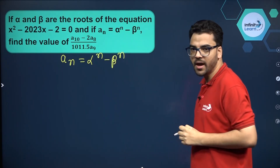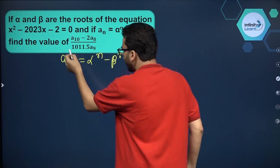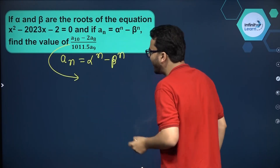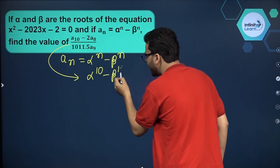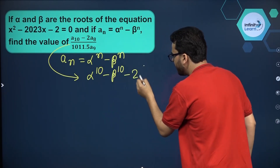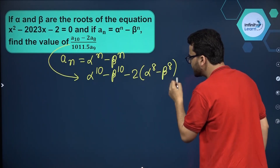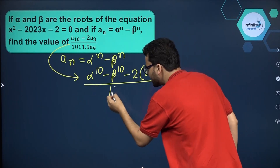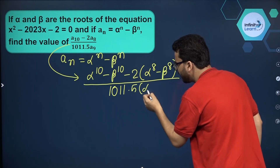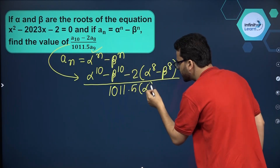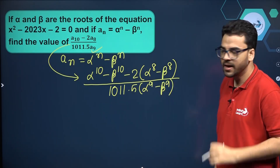The very first thing is to see what we actually have to find. Aₙ equals alpha raised to the power n minus beta raised to the power n. We have to find A10, A8, and A9. So A10 will be alpha raised to the power 10 minus beta raised to the power 10. A8 will be alpha raised to the power 8 minus beta raised to the power 8, divided by 1011.5. A9 will be alpha raised to the power 9 minus beta raised to the power 9.